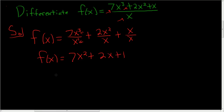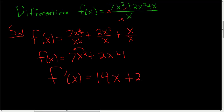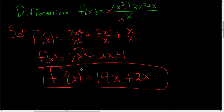And now the easy part — taking the derivative. So f prime of x: you bring the 2 down, so you get 14x. The derivative of 2x is 2, and the derivative of 1 is 0. Looks like I messed up there — the derivative of 2x is 2. I hope this helps someone out there.